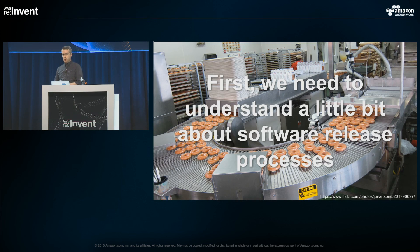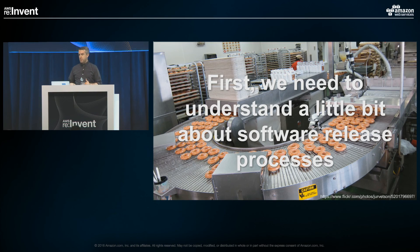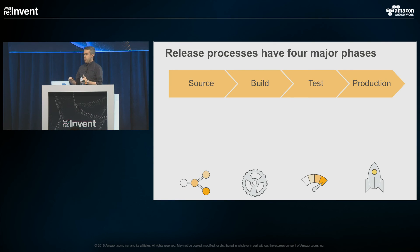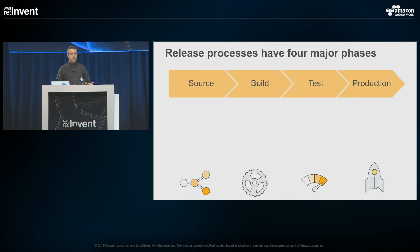First, let's talk a little about the software release process. I spend a lot of time talking to companies all over the world about this. There are a number of terminologies we all use, sometimes interchangeably. I want to quickly set how we at AWS represent some of these terms. We see four major phases that exist inside of software delivery — some of these get repeated, but essentially you can think of it as four different topics.